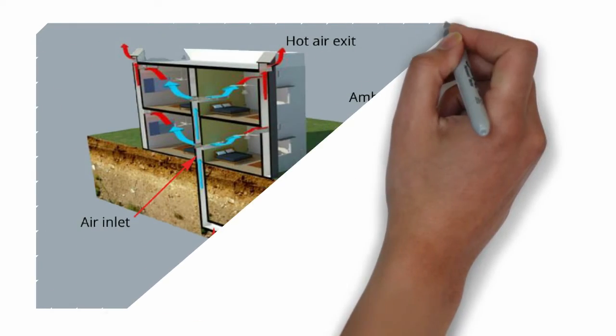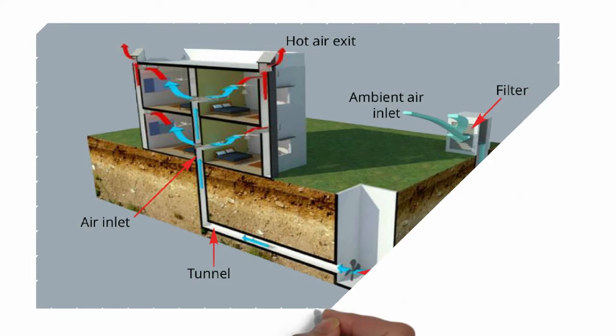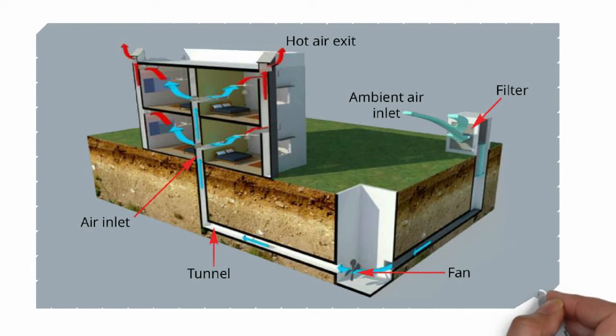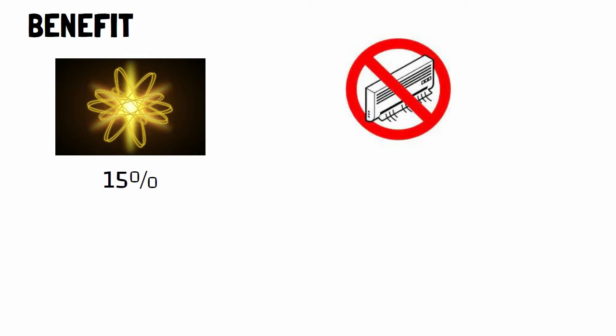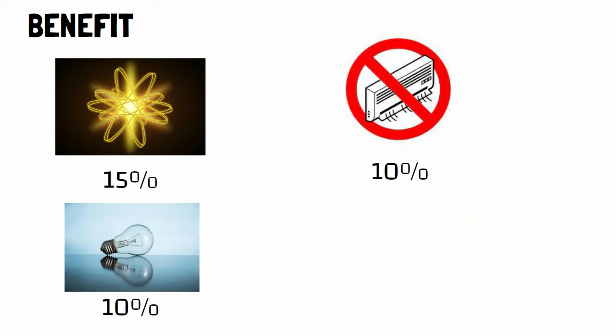the earth air tunnel is used for preheating and cooling which consists of a network of pipes buried at reasonable depth below the ground. Benefits of this system are it reduces consumption up to 15%, 5 to 10% reduction in air conditioner demand, saves electricity bill 8 to 10%, and it is environment friendly.